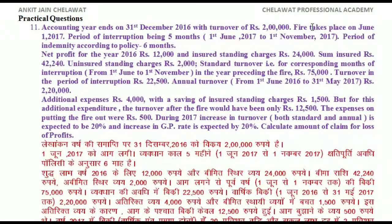Sum insured is ₹42,240. Uninsured standing charges are ₹2,000. Standard turnover for the corresponding months of interruption (1st June to 1st November in the preceding year) is ₹75,000. Turnover in the period of interruption is ₹22,500. Annual turnover from 1st June 2016 to 31st May 2017 is ₹2,20,000. Additional expenses are ₹4,000 with a saving of insured standing charges of ₹1,500. The turnover after the fire would have been only ₹12,500. Fire-fighting expenses were ₹500. In year 2017, increase in both standard and annual turnover is expected to be 20%, and increase in GP rate is expected to be 2%. Calculate the amount of claim for loss of profit.